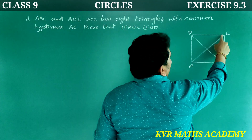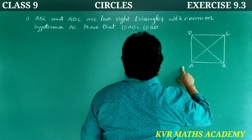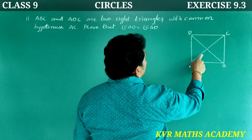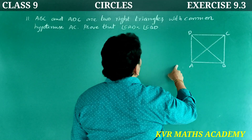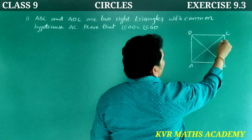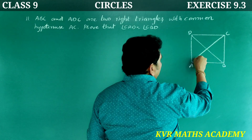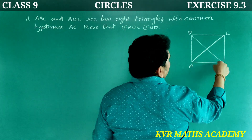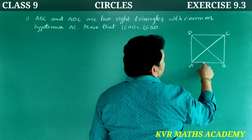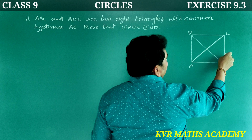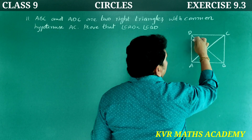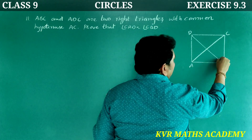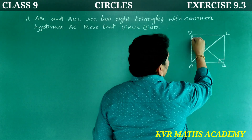Here the two right angle triangles have the common hypotenuse AC. This is AC. Triangle ABC and triangle ADC are right angle triangles, so this angle is 90 degrees.